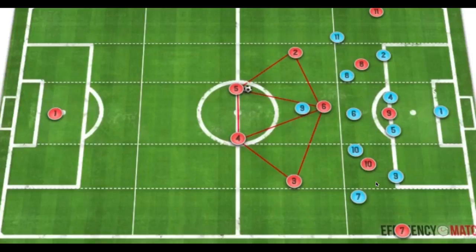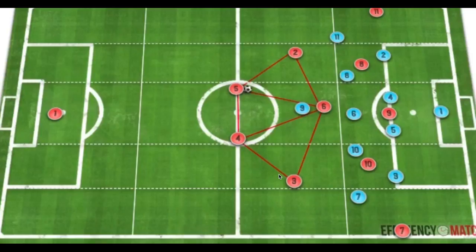As Jürgen Klopp would say, a good counter press is better than any number 10 in the world and will create more chances for your team than any playmaker. As we see here, a typical offensive structure that's come to be a favorite among many teams is a two-three rest defense using the full width of the wingers. This isn't how we're going to attack to utilize a fast transition in terms of defensive transition and a fast counter press.